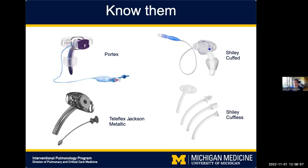Some inner cannulas are reusable and some are disposable. This is important because in some cases these inner cannulas serve as a tool to connect the patient to the ventilator if required, and also help avoid clogging of the tracheostomy. You have to become familiar with what's available at your institution. At the VA we commonly use Portex tracheostomies; here at the University of Michigan we have the Shiley. We also have the Jackson Metallic, which is common in patients with laryngectomies, and Shiley cuffless. The most commonly used are Shiley cuffed.